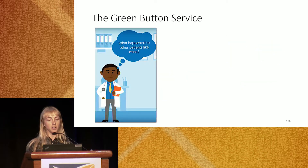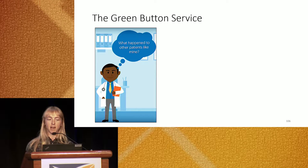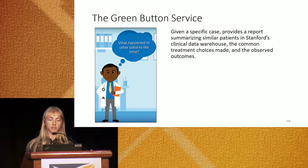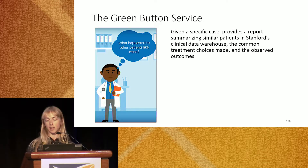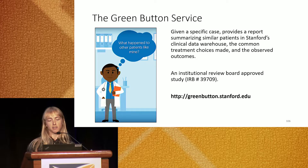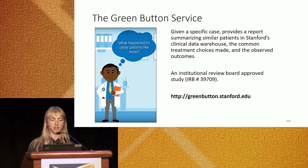I want to go over what we mean by an informatics consultation service, or the Green Button service as some of you may know it. The concept is that when a clinician has a question of the form 'what happened to other patients like mine,' they can come to our team, and we will provide a report summarizing the experiences of similar patients from Stanford's Clinical Data Warehouse — the common treatment choices made for those patients and their observed outcomes. We have carried out an IRB-approved study of this service over the past two years. You can learn more at greenbutton.stanford.edu.